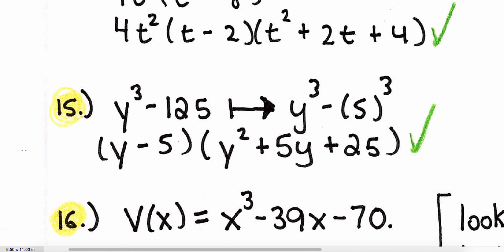Number fifteen follows the difference of two cubes: y to the third minus 125. Since 125 is 5 to the third power, a is y and b is 5. This becomes y minus 5, times y squared plus 5y plus 25.